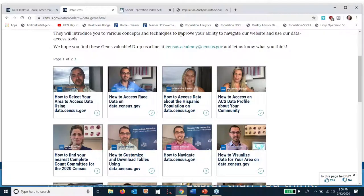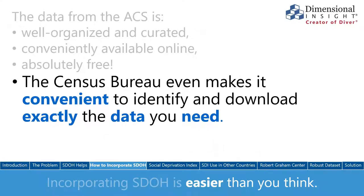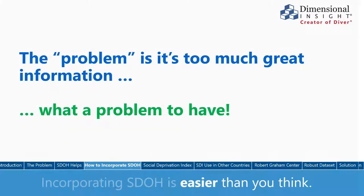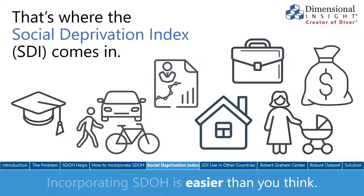How do you make sense of all this data at a practical level? The good news is that the ACS provides a comprehensive view of information around social determinants. However, the challenge is that it's almost too much information to comprehend and put to good use — it can be overwhelming. Fortunately, there's been a lot of work done to help distill the information down to something really useful.